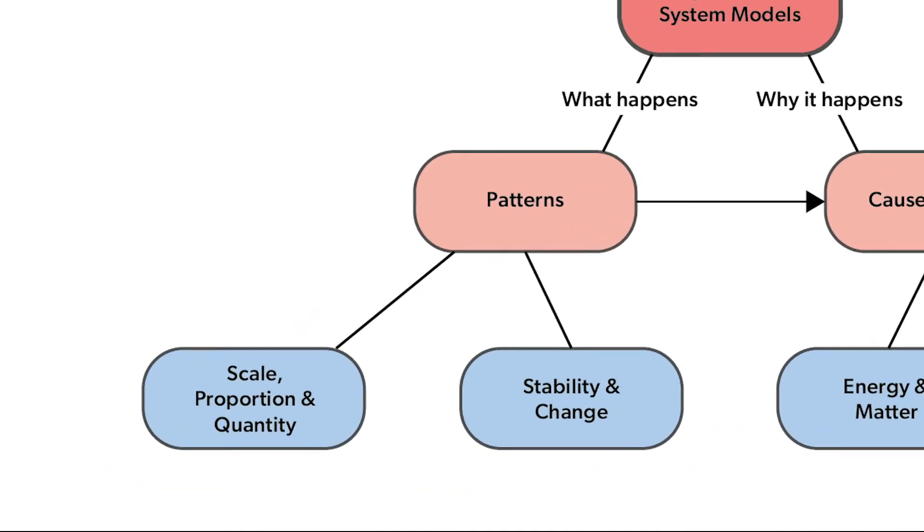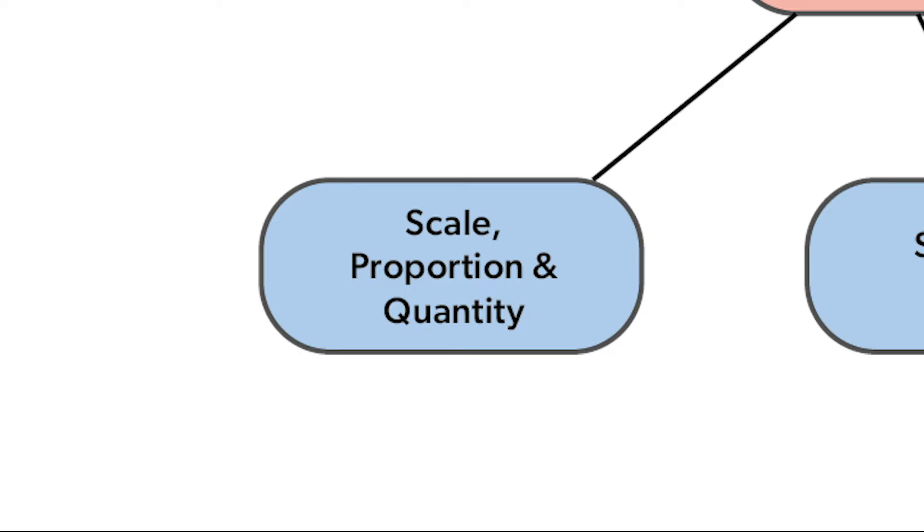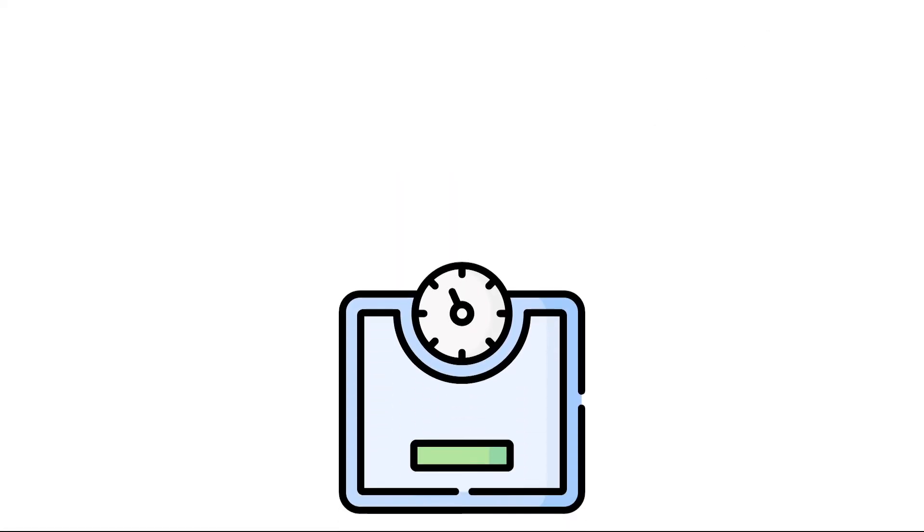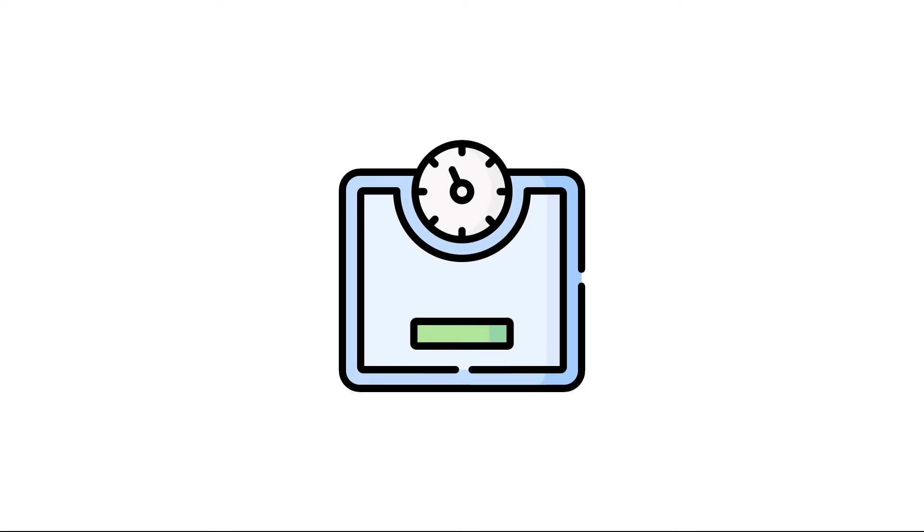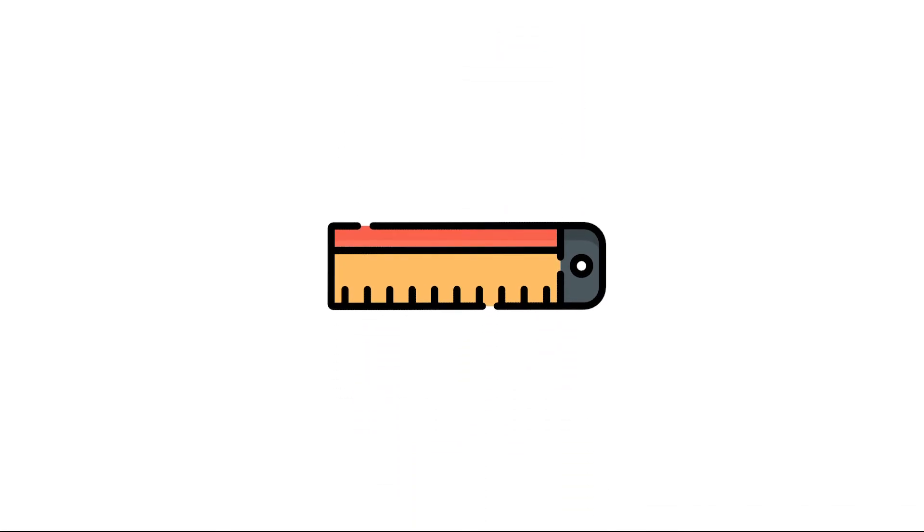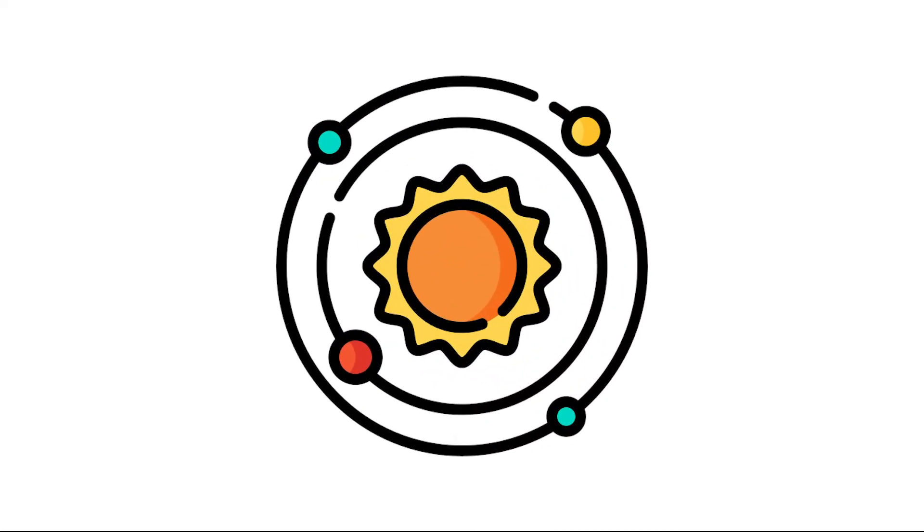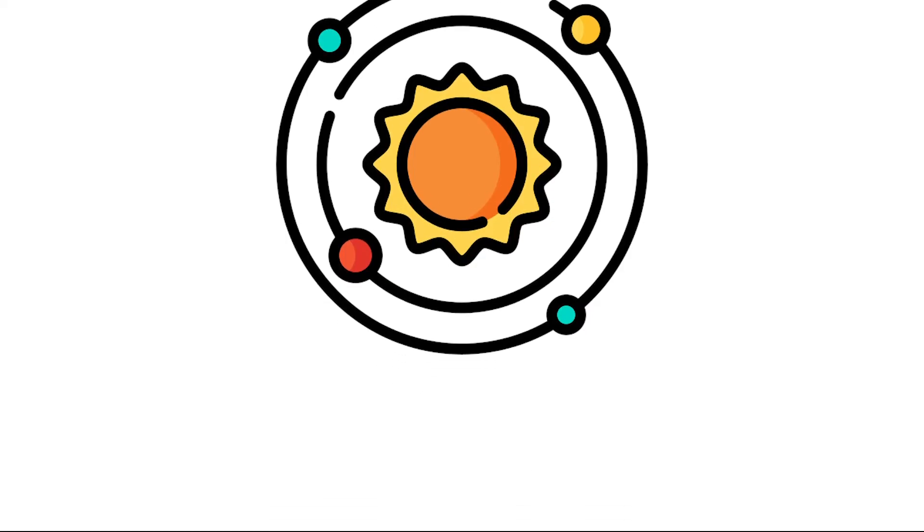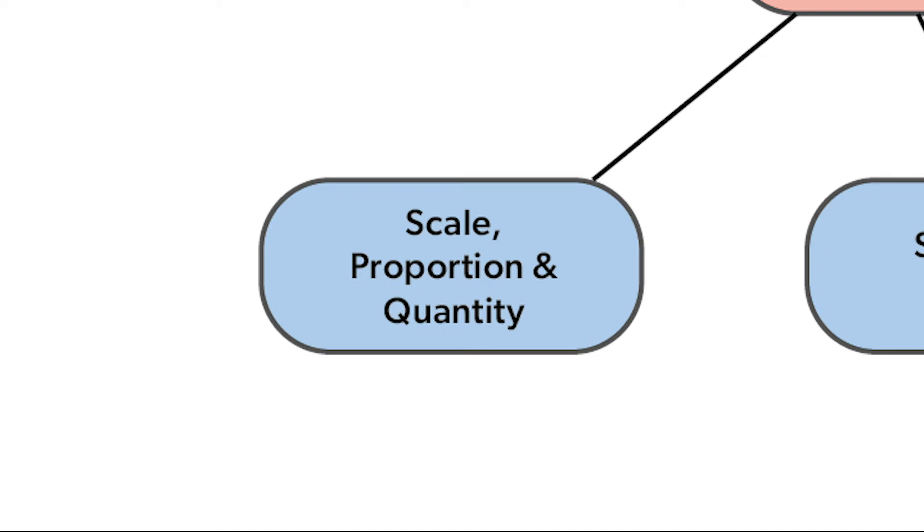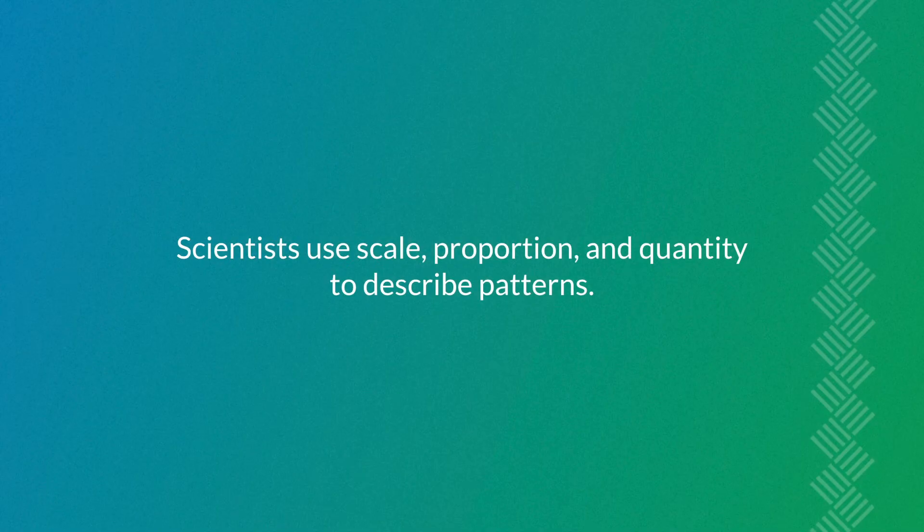You may have heard the word scale used in different contexts. In daily life, a scale is what you weigh yourself on in the bathroom. In science, scale means something different. Scale is the size of something. Scale varies. Things can be very small, like a cell, or very large, like a solar system. Scientists need to think about scale, because scale affects how things work. Proportion and quantity help scientists describe scale. Scientists use scale proportion and quantity to describe patterns.